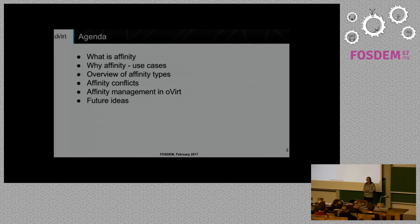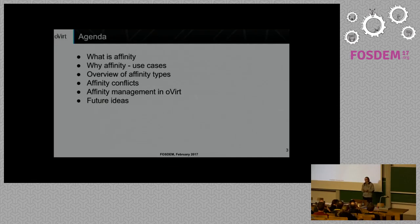So what I'll be talking about today: I'll be talking about VM affinity. First I'll tell you what we think affinity is, what use cases we see for affinity, then we'll overview the actual affinity types we decided to implement. I'll show you something about affinity conflicts, we'll talk about the actual management of affinity in oVirt, and then I'll discuss some future ideas and we'll have time for questions.